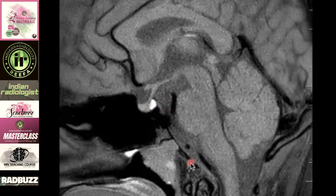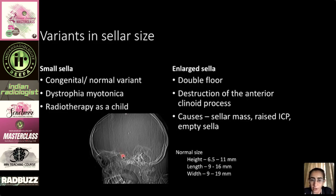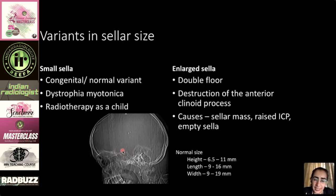The sella — any enlargement or erosion — is typically assessed on CT. Previously this was done on skull X-rays, but those are rarely performed now. On the sagittal view of the skull or sagittal CT reformats we can note whether the sella is small or enlarged and whether there is any erosion. With modern multiplanar CT — 128- to 256-slice scanners, or even 16-slice — we can reformat axial images into sagittal views to assess sella size.